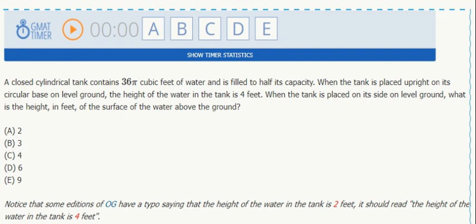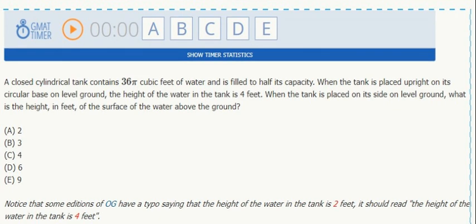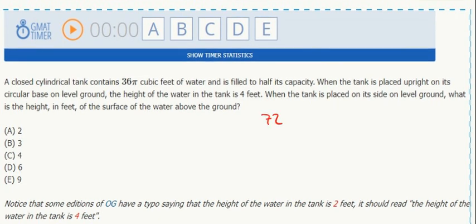A cylindrical tank contains 36π cubic feet of water and is filled to half its capacity, so the total capacity is 72π.